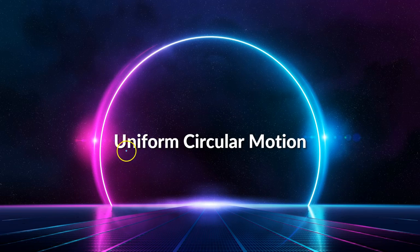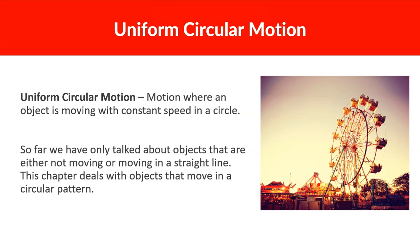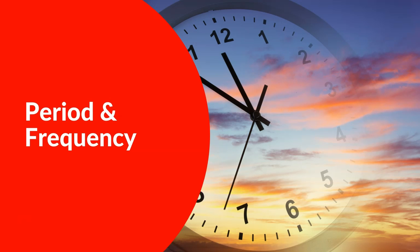Welcome back. Today we are talking about uniform circular motion. Uniform circular motion is motion where an object is moving with constant speed in a circular pattern. A good example of this is a Ferris wheel, or swinging a ball in a circle. So far we've only talked about objects that are either not moving or moving in a straight line. This chapter deals with objects that move in a circular pattern. For this part, we're going to be primarily talking about period and frequency.